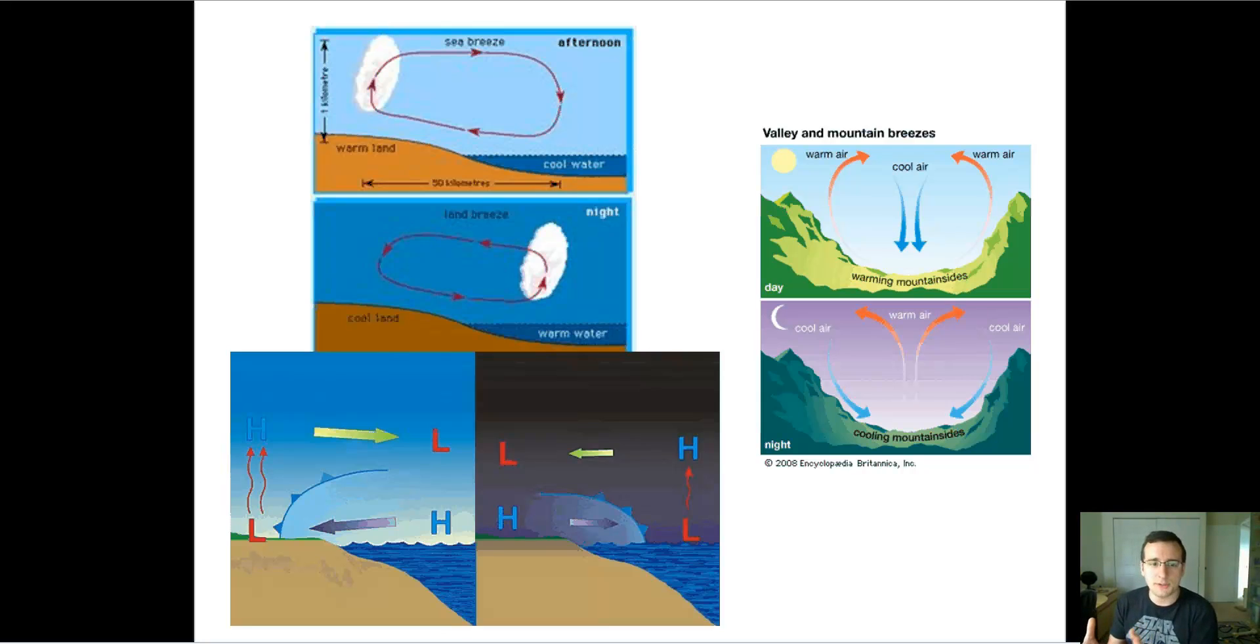And similar processes occur between valleys and mountains. During the day, the valleys are going to be warmed up so much that the air is going to rise and then sink afterwards. But during the night, the opposite occurs and the mountains are going to cool down faster because they're made of land. So these are patterns of wind that occur because of the whole absorption pattern that I just described.